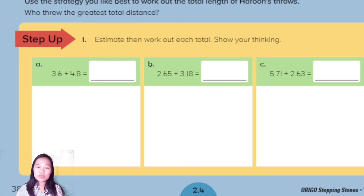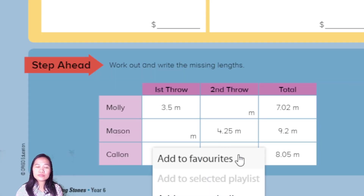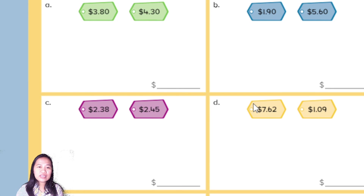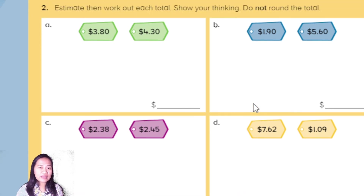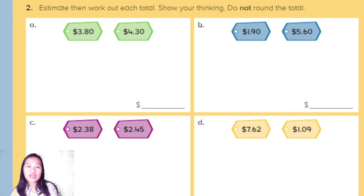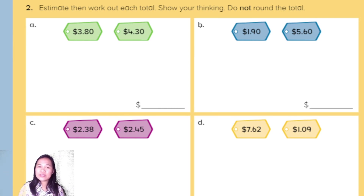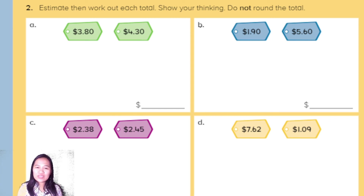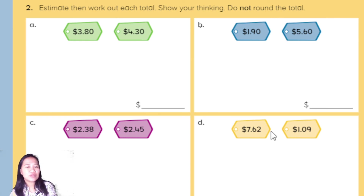The question asks you to show your working, not just the answer. Do not use the rounding method for this — you should not round the total. Use a different method instead.